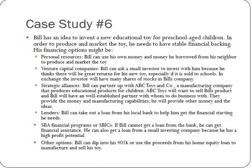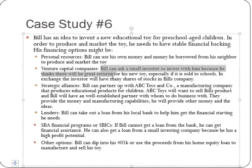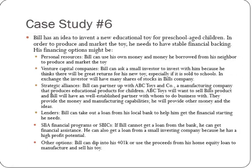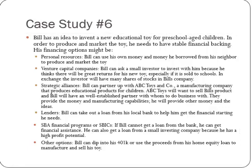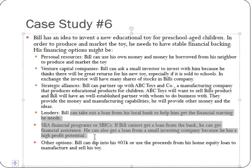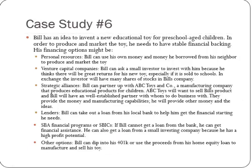Case study: Bill has an idea to invent a new educational toy for preschool-age children. To produce and market the toy he needs stable financing. He can use his own money or money borrowed from a neighbor. He can go to a venture capital company or small investor in exchange for a percentage — similar to Shark Tank, an MSNBC show where people pitch business ventures. He can form strategic alliances, partnering with ABC Toys and Company, which is a manufacturing company that can help fund manufacturing and advertisement. He can take out an SBA loan or go into his 401k retirement account to finance selling and manufacturing the product.